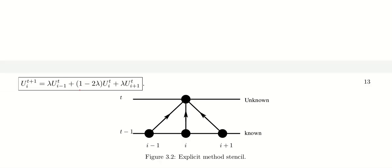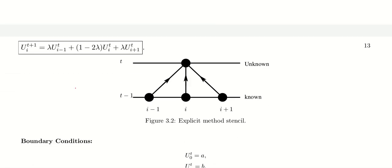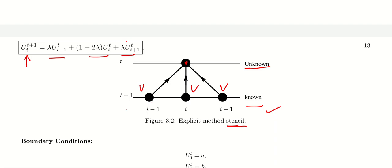This is the explicit method stencil. The value at the upper point is unknown; it requires the known values of u at the three points below — position i-1, i, and i+1 at the previous time level. The unknown is on the left-hand side and all required values are known. That is why this is called the explicit method: there is only one unknown and all other values are already known.